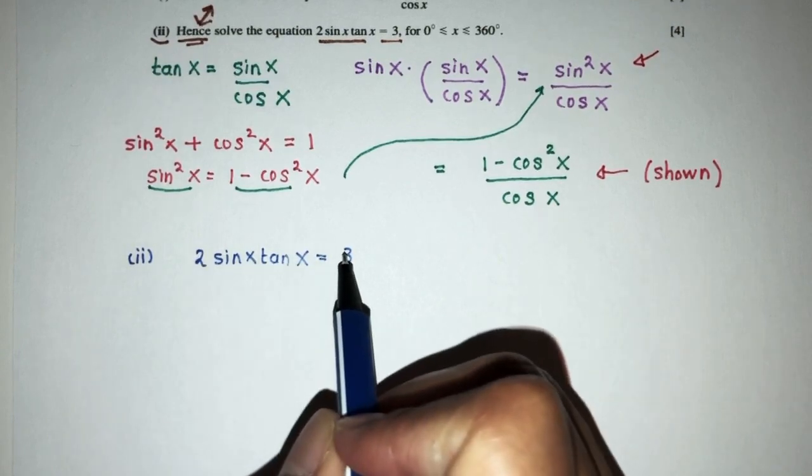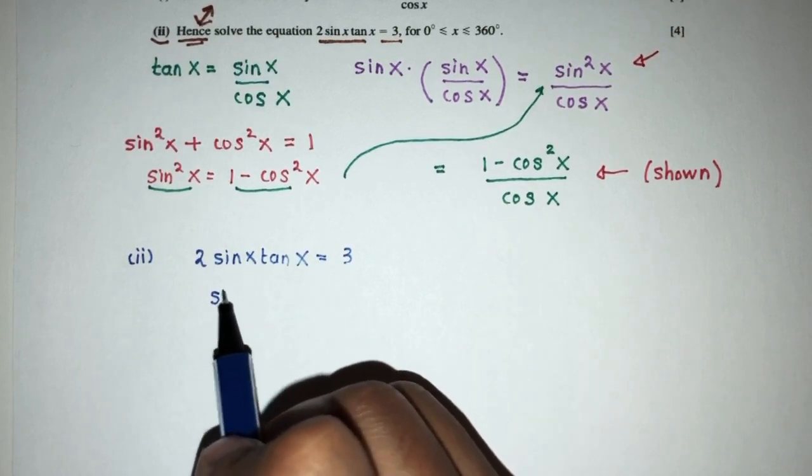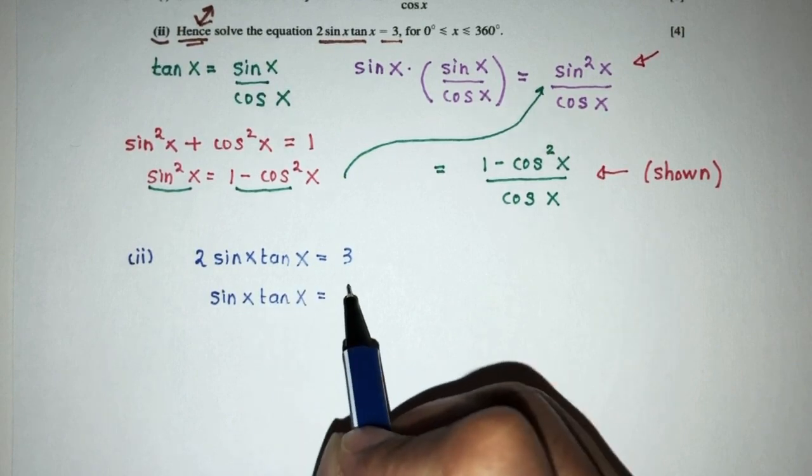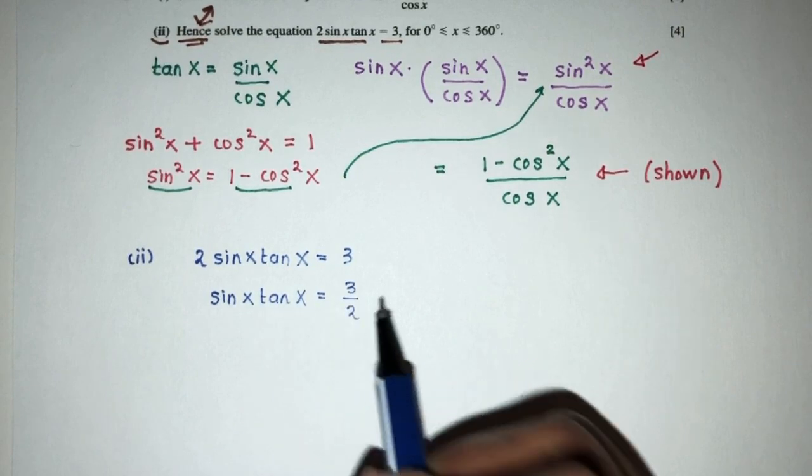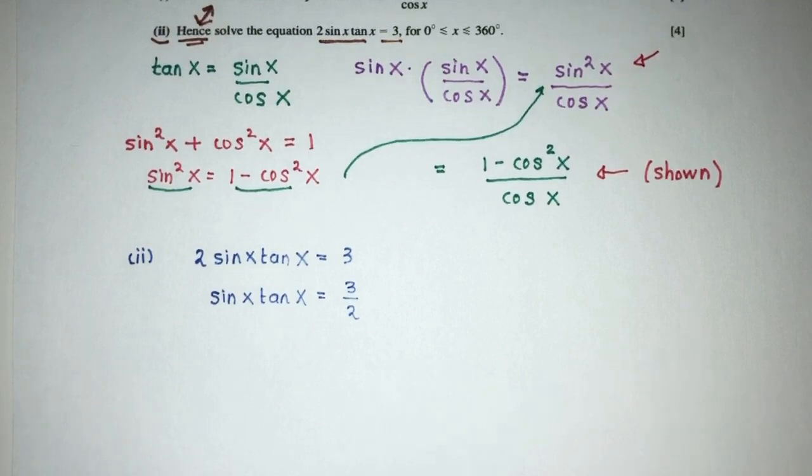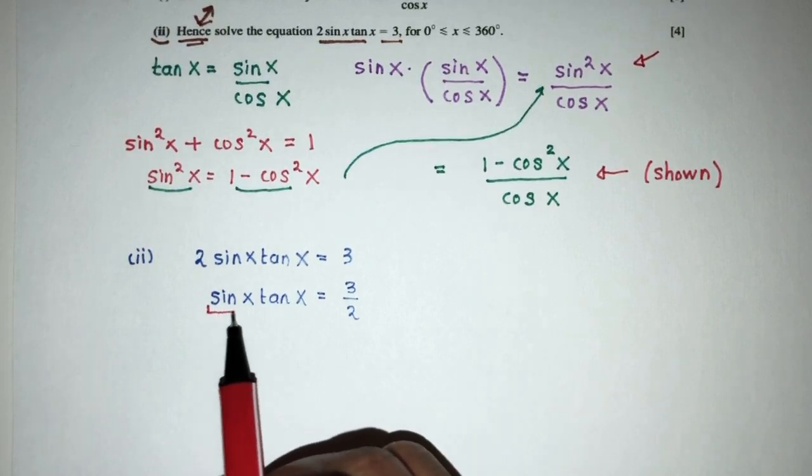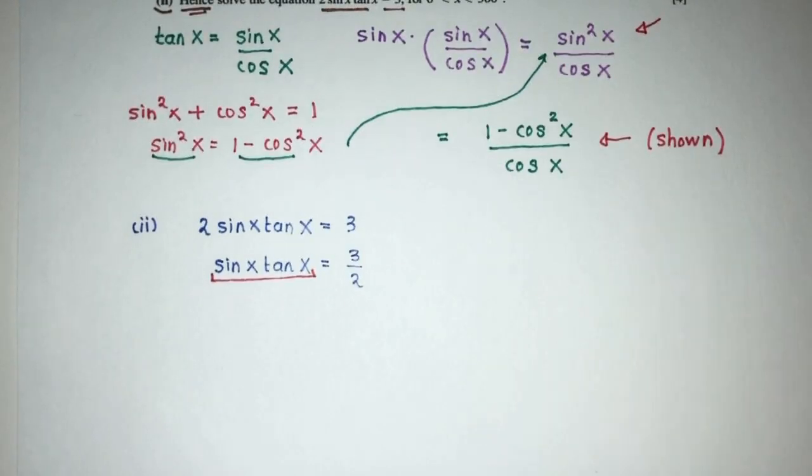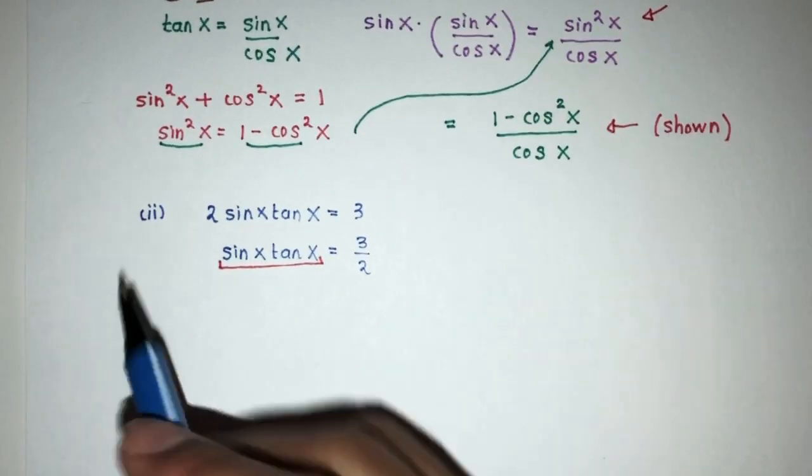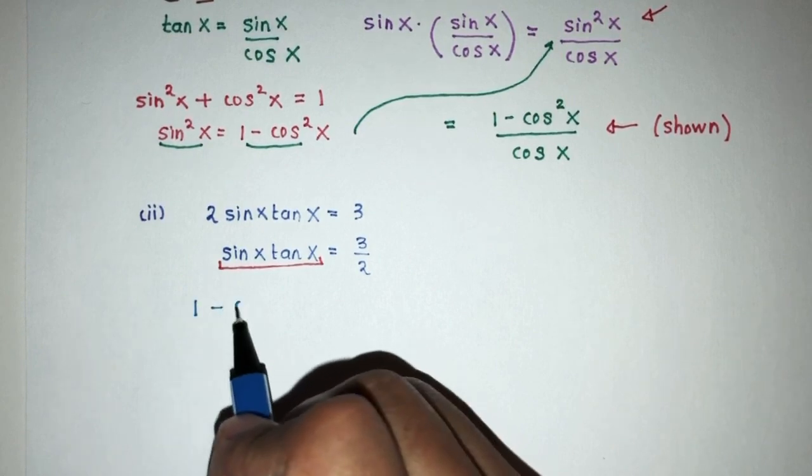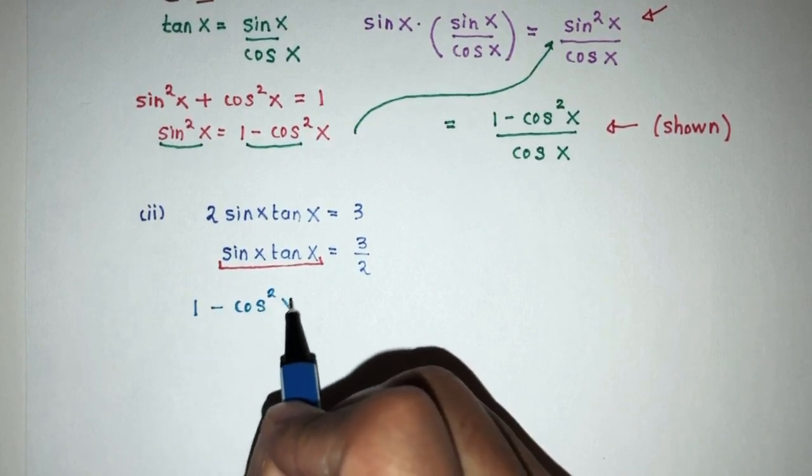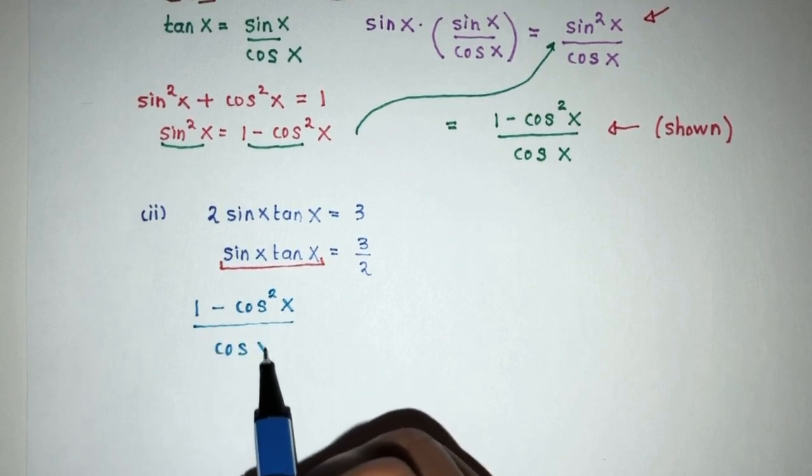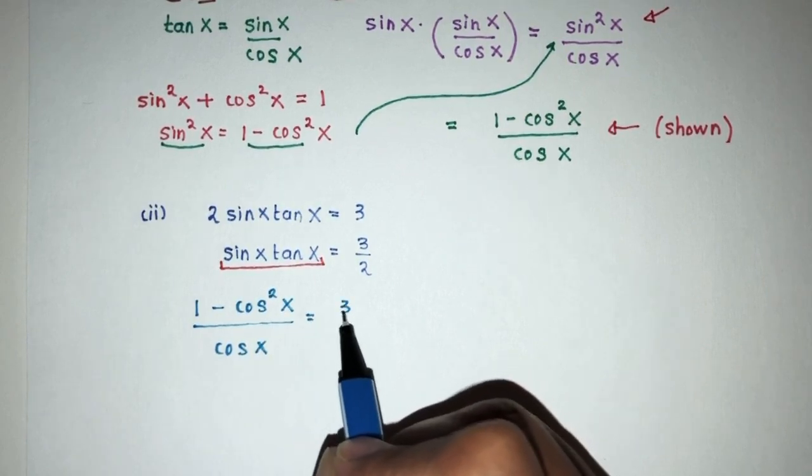We can first send this over here. So divide by 2 on both sides, you will have sine x tan x is equal to 3 over 2. That's the first step. Now from part 1, we realized that this one is actually equal to this. So we have to replace. Let's see what happened. So you will have 1 minus cos square x over the value of cos x is equal to 3 over 2.